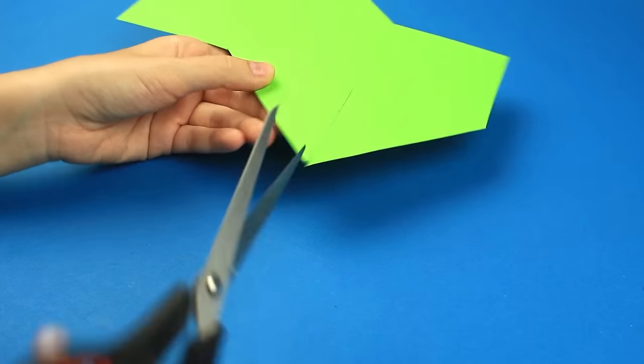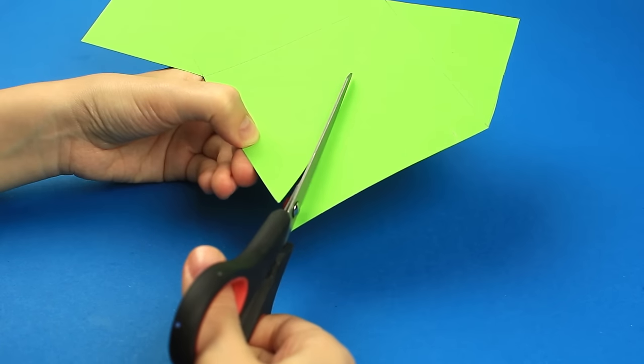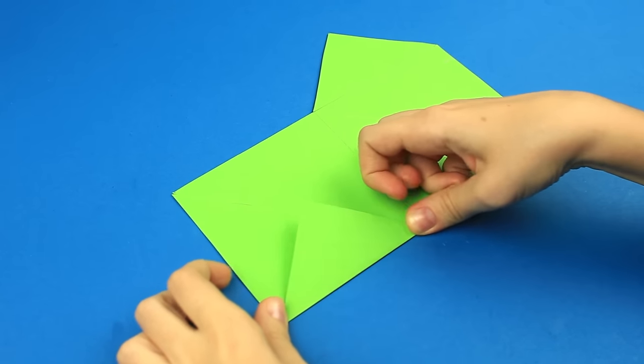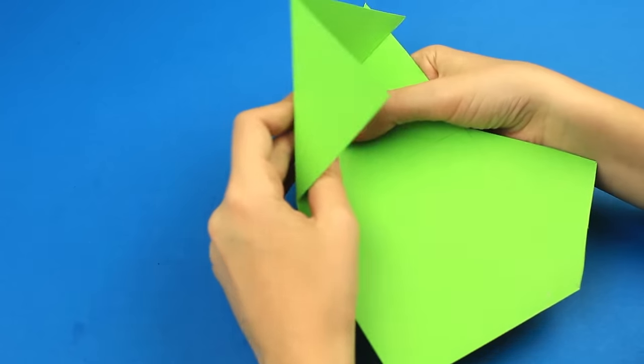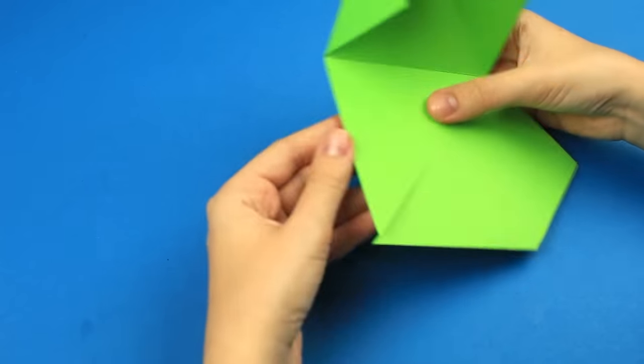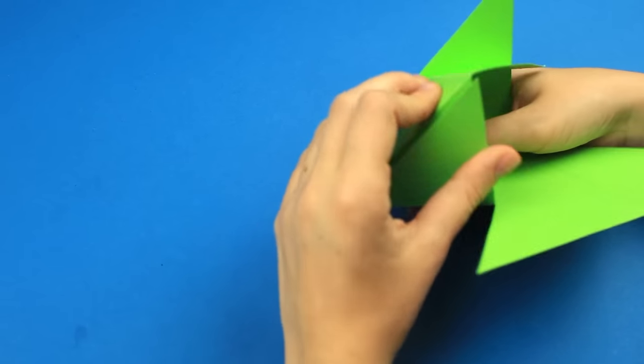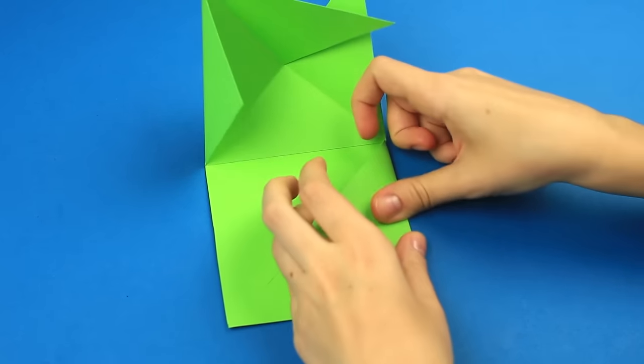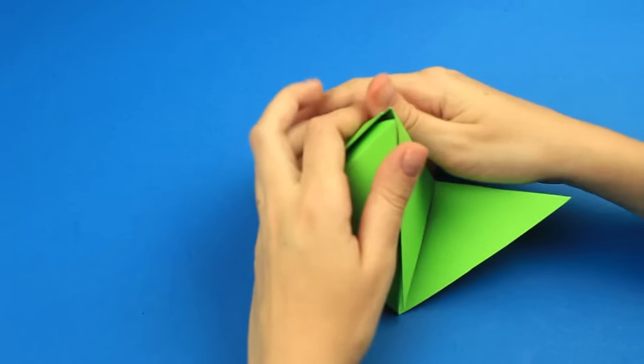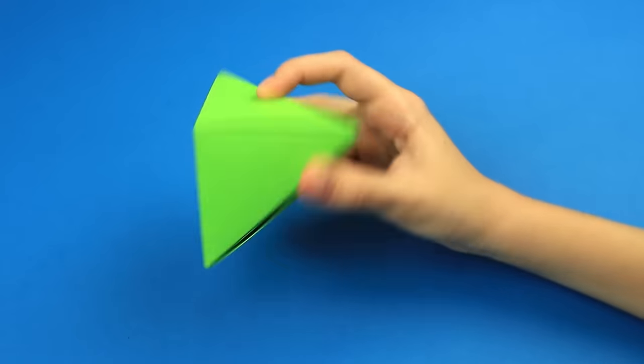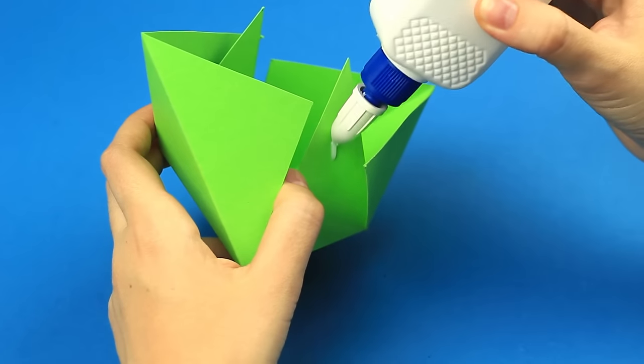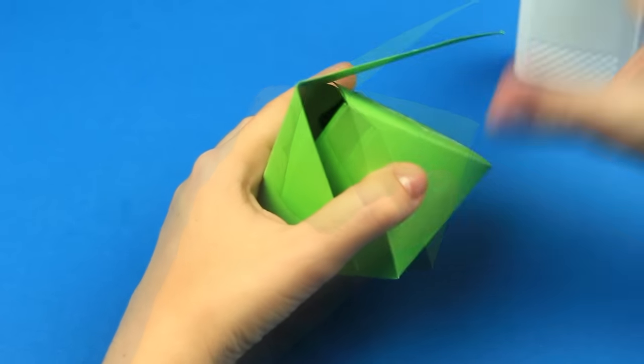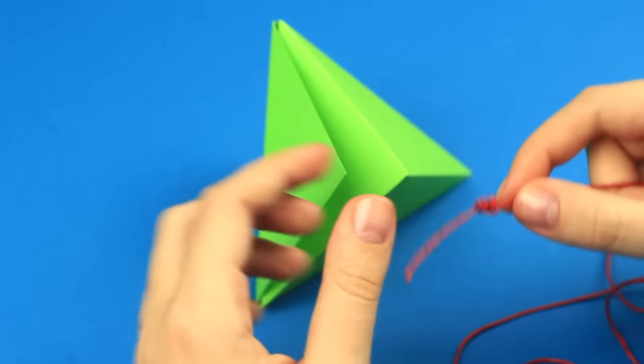Cut the lines up to the center in the opposite corners. Fold the scored lines. Attach with white glue and fasten with cord.